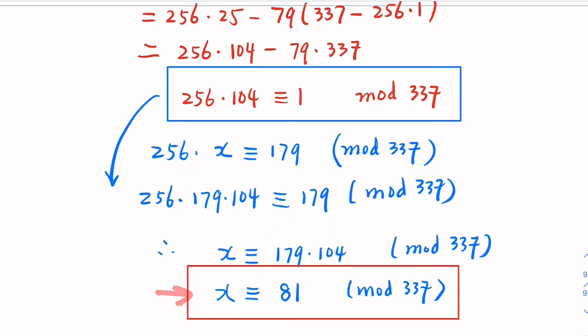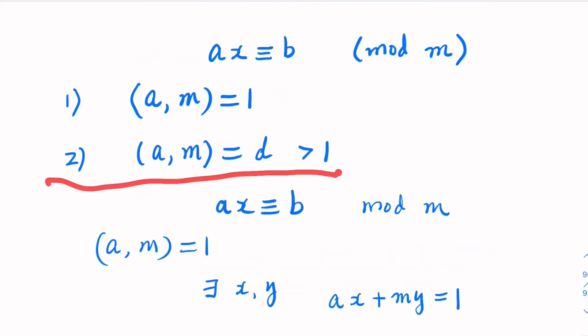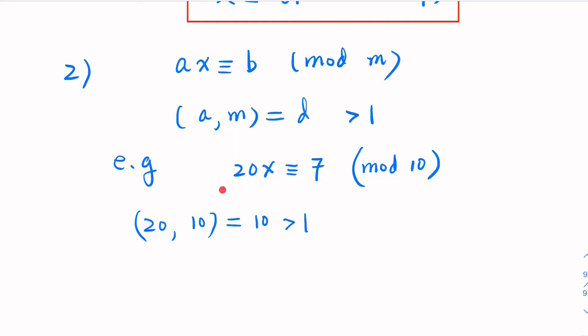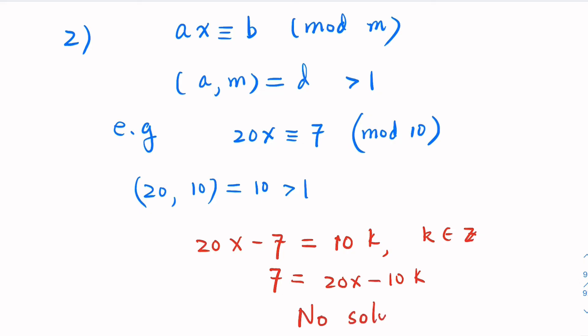What about the second case, where the modulus and the coefficient here has a common factor? For example, so in this case, the coefficient 20 and 10, the common factor here is 10 is greater than 1. They are not relatively prime. Now here, in order for this equation to have the solution, the quantity b here must also be multiple of 10. Why? Because this equation, it is equivalent to saying that 20x minus 7 would equal multiple of 10, where k is some integer. This is impossible in our case, so no solution here.